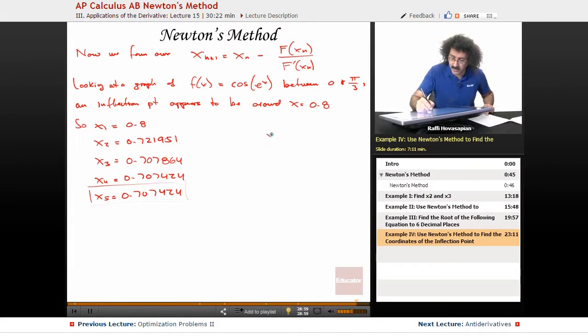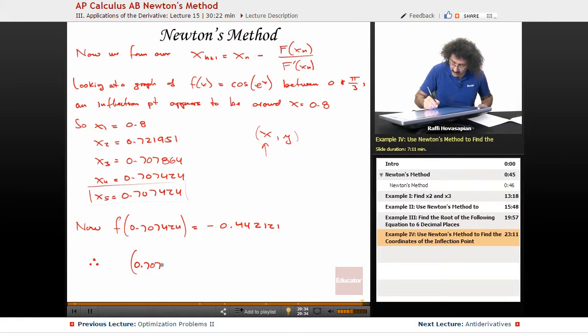They wanted the coordinates, in other words, they wanted both x and y. What I found was just the x. Now let's go ahead and find y. Now, f of 0.707424, the original function, was negative 0.442121. Therefore, our coordinate equals 0.707424, minus 0.442121.